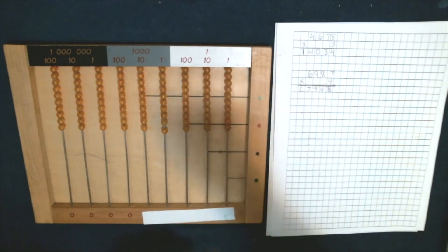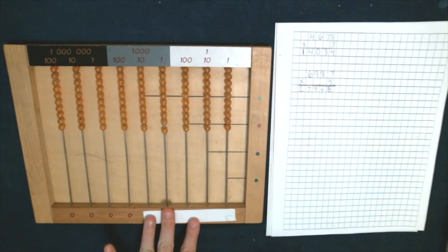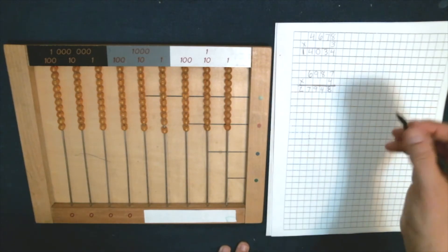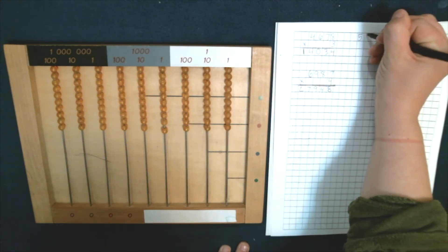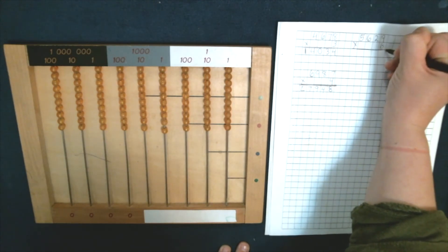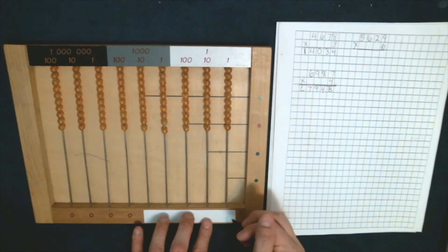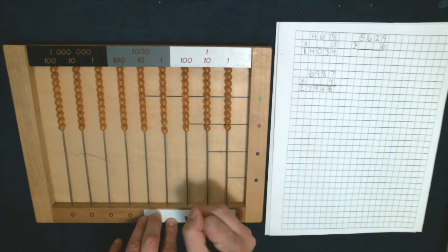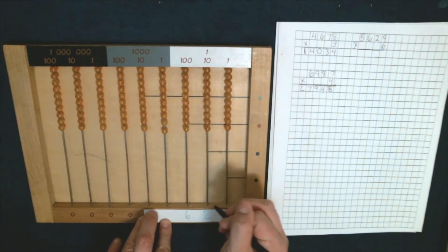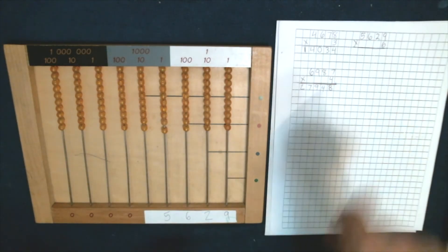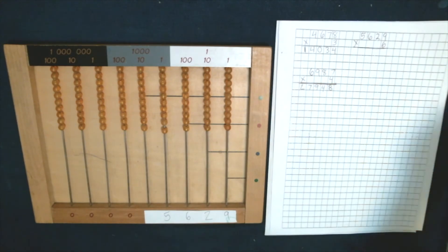Let's just do one more together. We're going to multiply 5,629 times six. I'm going to write my multiplicand down. Nine units, two tens, six hundreds, five thousands. And we're going to multiply this by six. Here we go, big time.